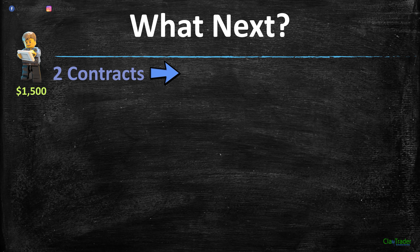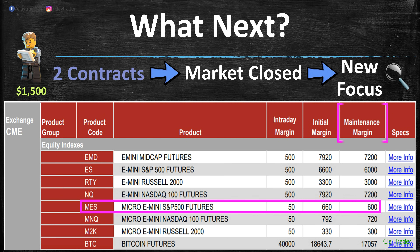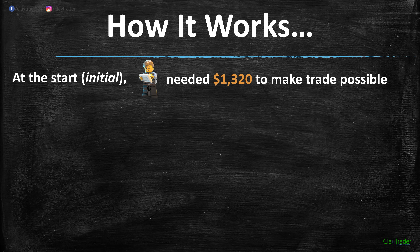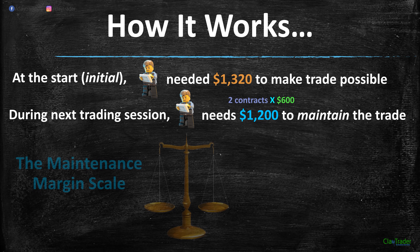Billy Bob now has two contracts. Markets are closed. We now need a new focus: the maintenance margin, which in this case is $600 per contract. How does maintenance margin work? At the start, initially — hence initial margin — Billy Bob needed $1,320 to make the trade possible. During the next trading session, Billy Bob needs $1,200 to maintain the trade. Where does $1,200 come from? He's got two contracts and the maintenance margin is $600 each — two times $600 equals $1,200.